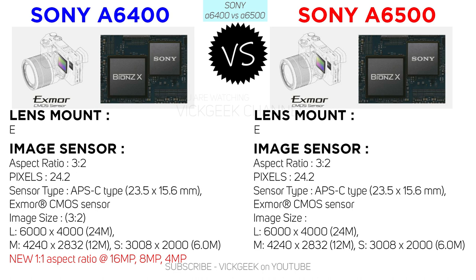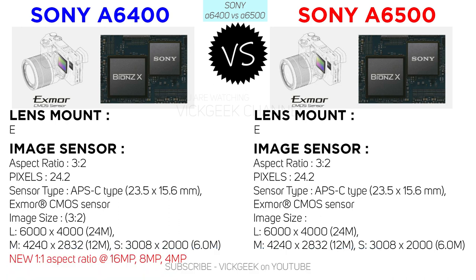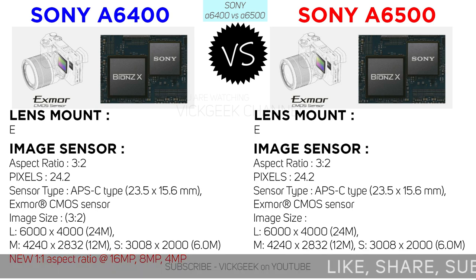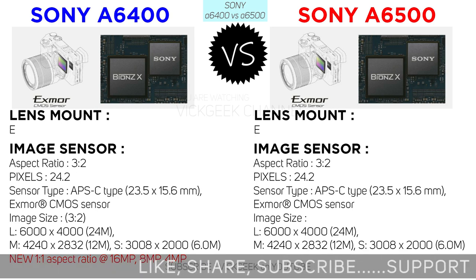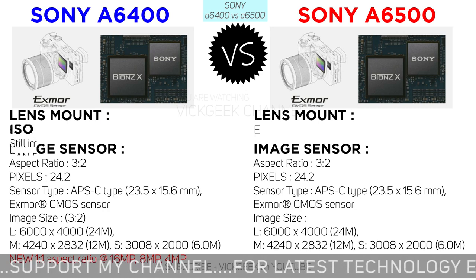The aspect ratio at full resolution is 3:2, which means there will be black bars on either side of your monitor when viewing images. There is a new 1:1 aspect ratio on the a6400, which is really helpful for direct Instagram sharing — you don't have to miss the frame while cropping to square. The a6500 simply doesn't feature this, so that's an added advantage with the a6400.